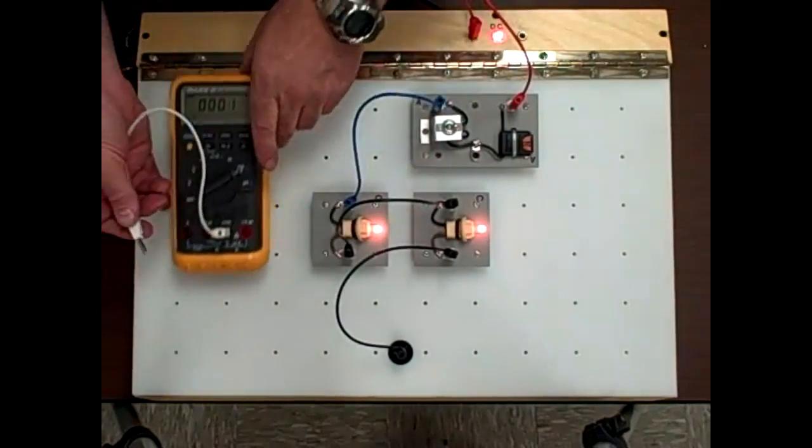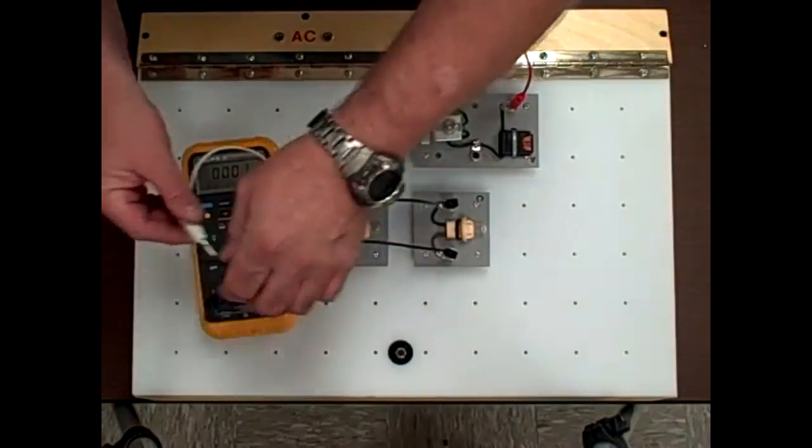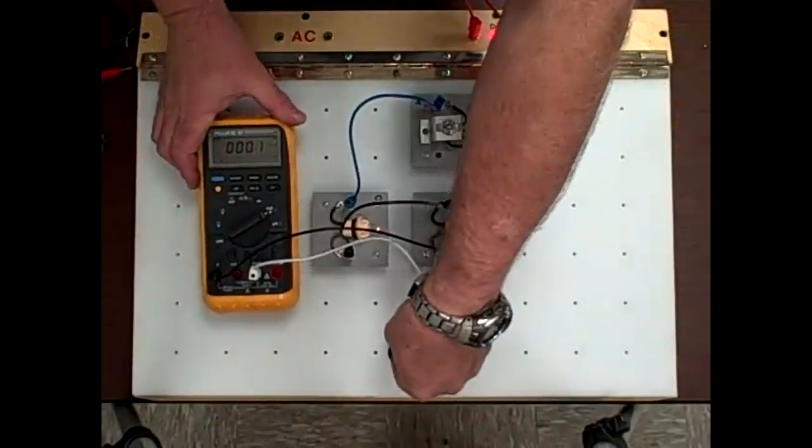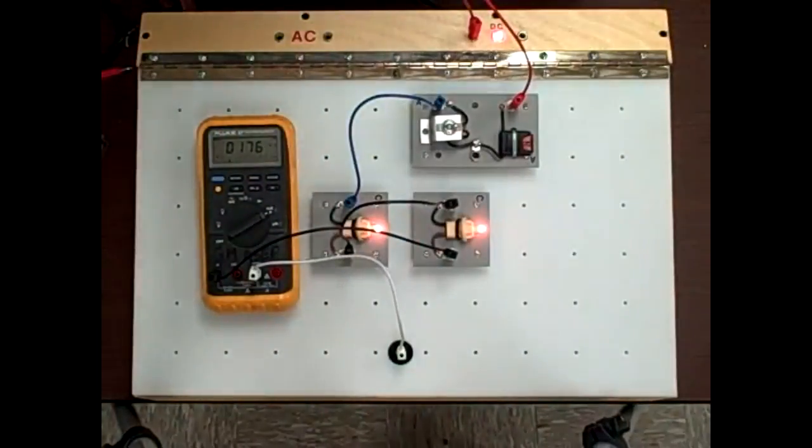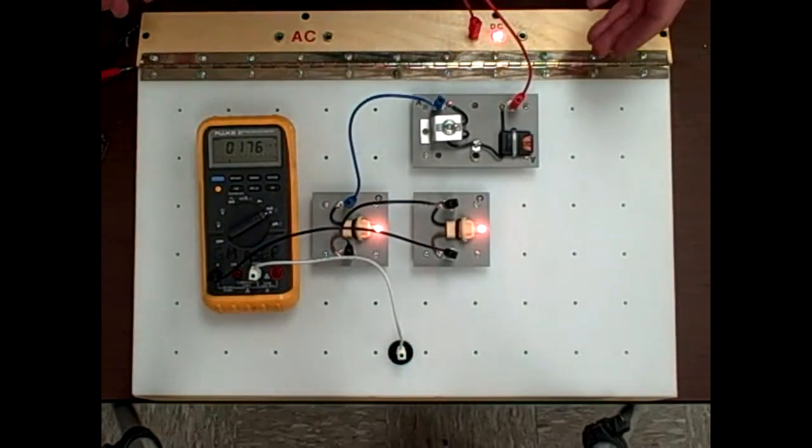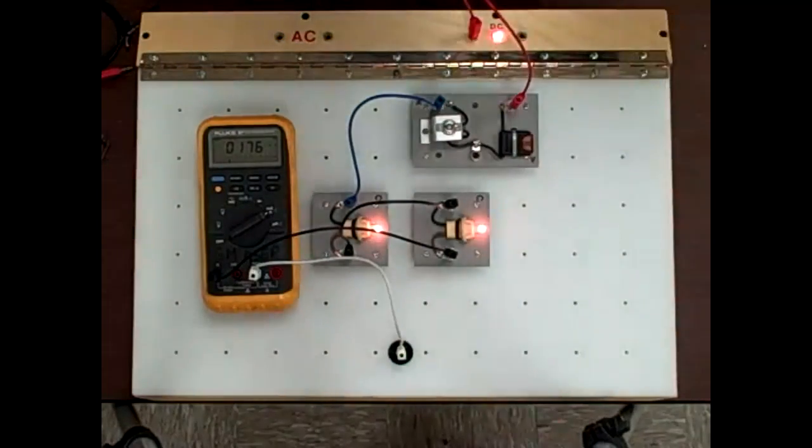Come way down here at the bottom, coming out of the bottom of the project on the way to ground, and we get the same number. This proves that in a series circuit the current is the same all through the circuit.